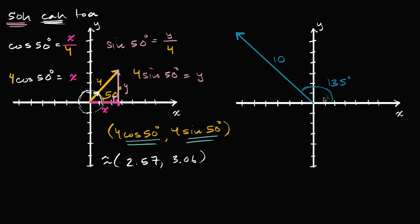Now let's tackle the second example. This is interesting because the terminal point, when drawn in standard form, is in the second quadrant. We can immediately tell: because we're in the second quadrant, our x-component is going to be negative and our y-component is going to be positive.